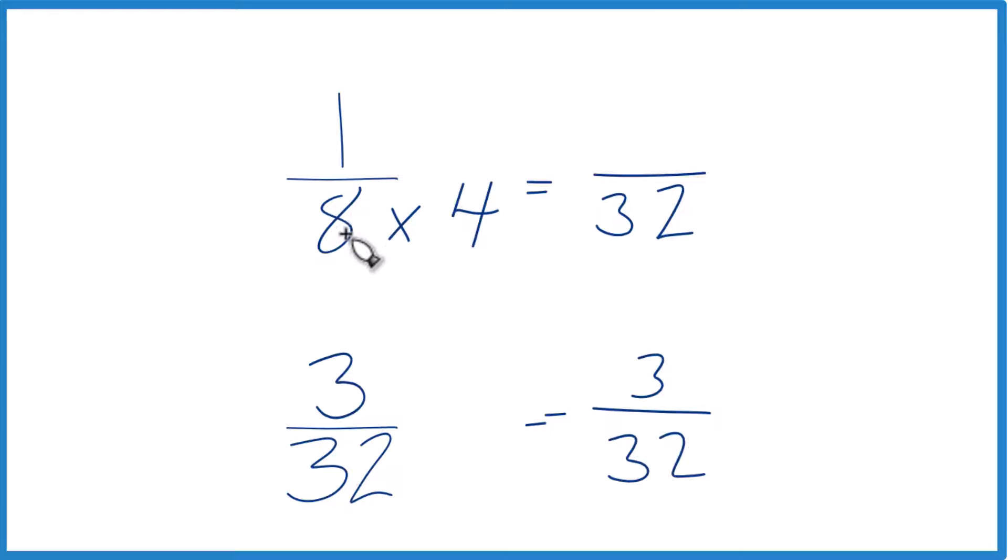But we can't just multiply the 8 here in the denominator by 4. We also have to multiply the numerator by 4. It's because 4 over 4 is 1, so we're multiplying by 1. We don't change the value, just the way it's represented.